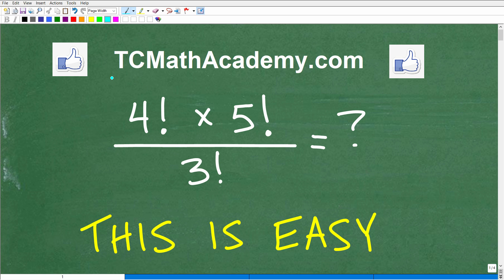Hello, this is John from TC Math Academy, and what I have for you here is a nice algebra problem. What does this even mean? We have four exclamation mark times five exclamation mark, all that divided by three exclamation mark.